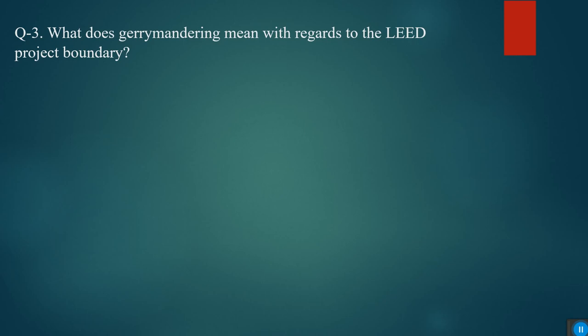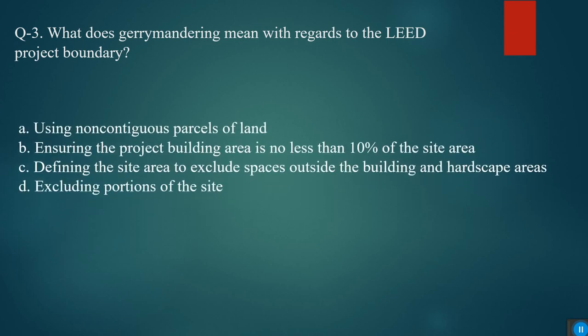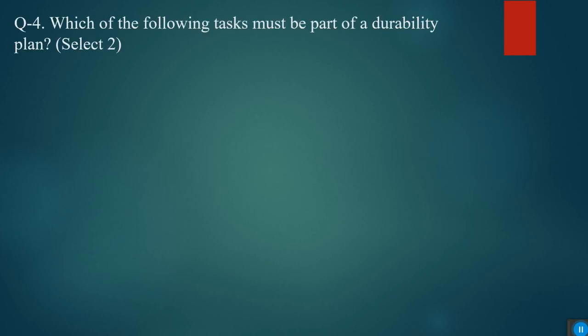What does LEED mean with regards to the LEED project boundary? Options are using non-contiguous parcel of land, ensuring the project building area is no less than 10% of the site area, defining the site area to exclude spaces outside the building and hardscape areas, or excluding portion of the site. The answer is excluding portion of the site.